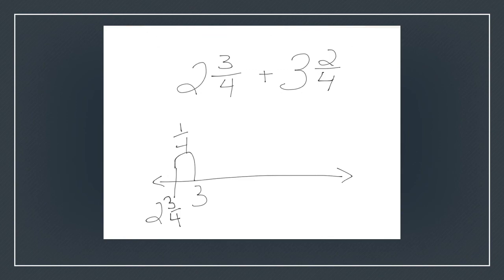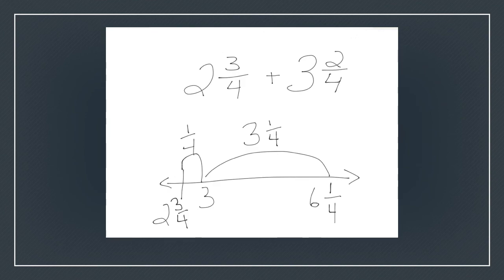I want to start with fractions, because fractions are not always friendly. One thing that's helpful is that kids will want to make the fraction friendly. So if I'm adding two and three-fourths, and I've got to add three and two-fourths onto that, kids will say, 'If I just add a fourth, I could get to three.' Then once they're at three, that's a benchmark-friendly number, and it becomes easy to add the remaining piece of the three and one-fourth to get the answer.